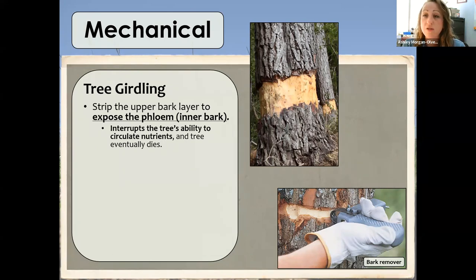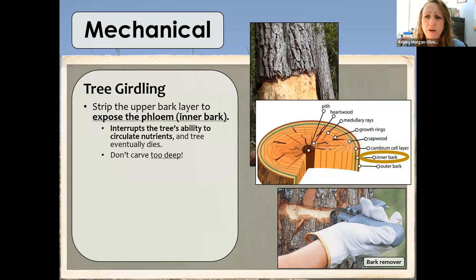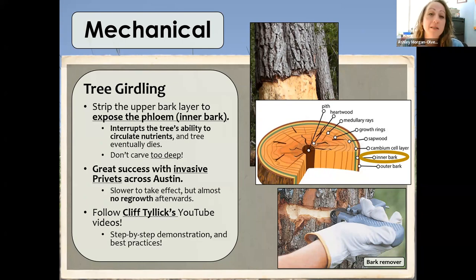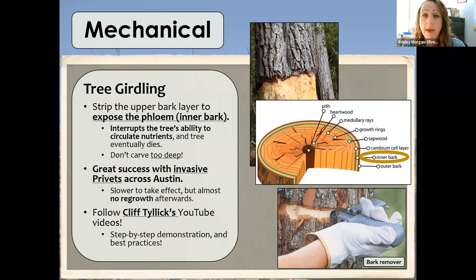If you're doing more mechanical work, look into tree girdling — shown to be very effective even against tallows and privets. You remove the outer bark layer exposing the circulatory system of the tree, causing it to dry out and eventually die. Master Naturalist Cliff Tyler has created really good videos — he's cleared multiple acres just girdling privets in Austin. This can be a really good fix for an area where chemical spray is not an option.